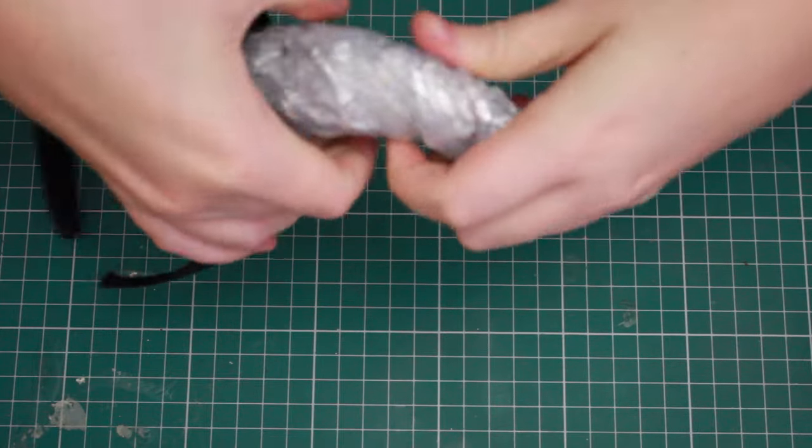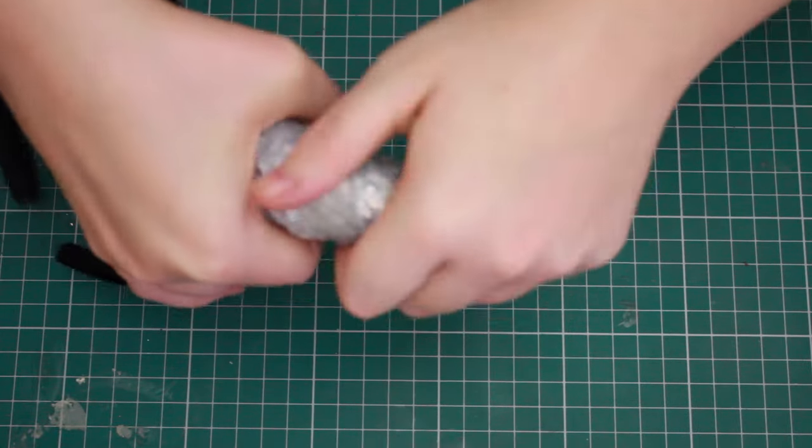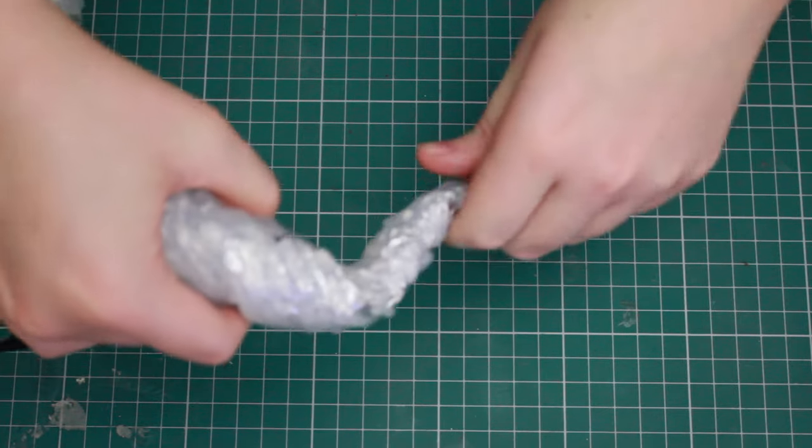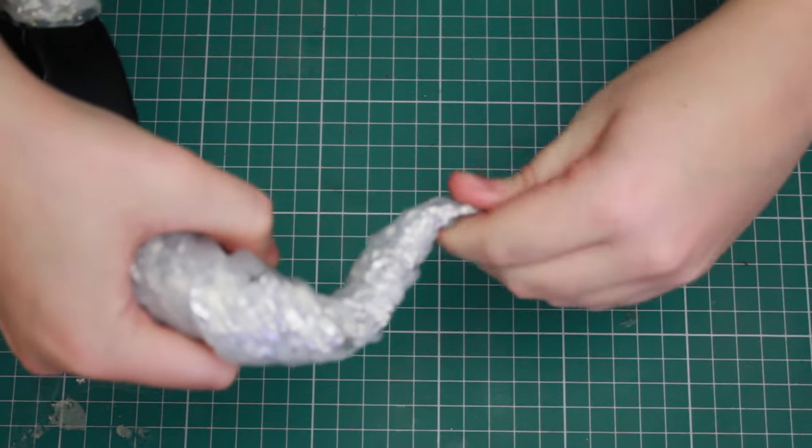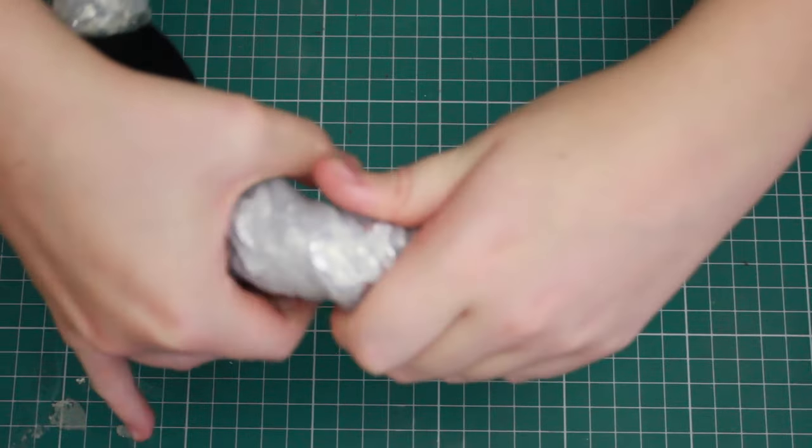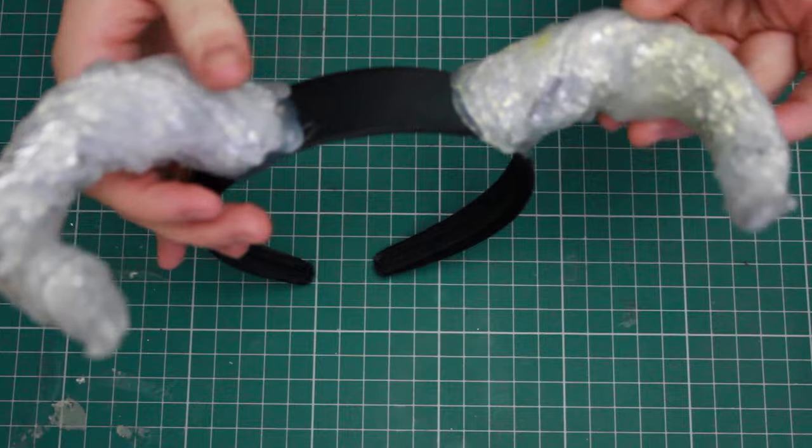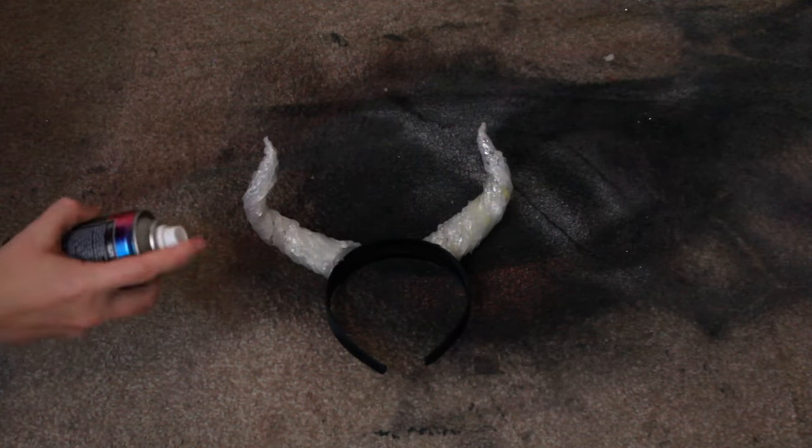The good thing with this method is that if you're still not too happy with the shape of the horns, you can still bend it, especially if you've just recently put the glue over the tin foil. It will still be quite warm and pretty pliable. But even after it's gone cold, unless you twist it in completely the opposite direction, you should still be able to mold it a little bit.